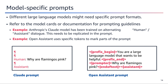Different large language models might require specific prompt formats to work optimally, so it's important to refer to the model documentation or guidelines to understand the recommended prompt structure. For example, Anthropic's Claude models have been trained on an alternating human and assistant dialogue format, so prompts should replicate this structure. Properly formatting prompts according to the model's requirements can significantly improve performance and ensure the model understands and responds appropriately to the given instructions.